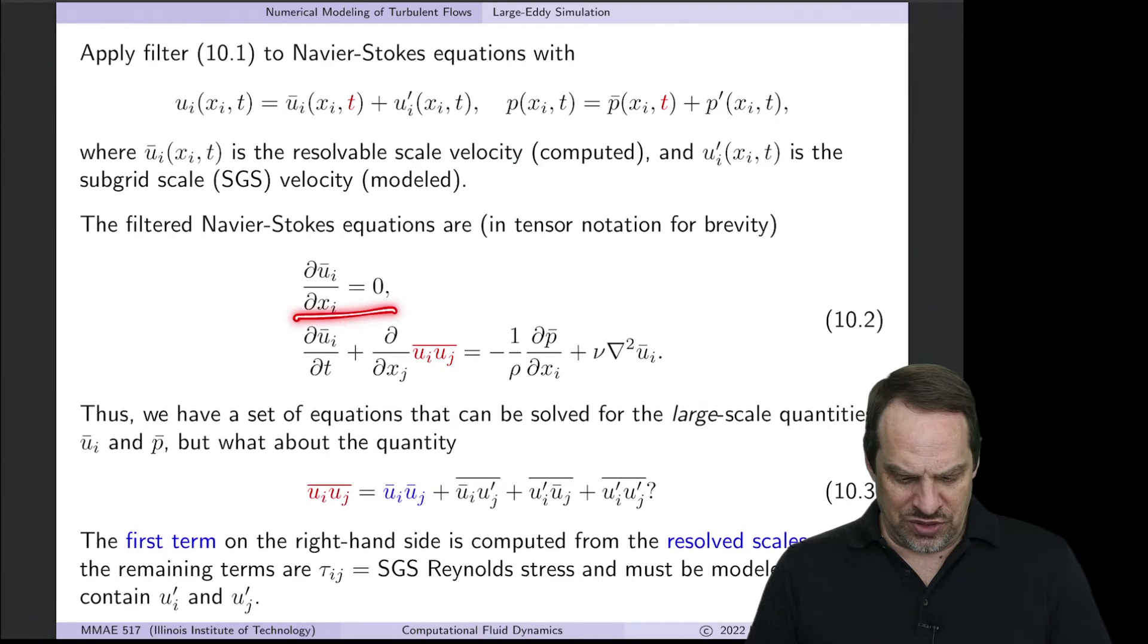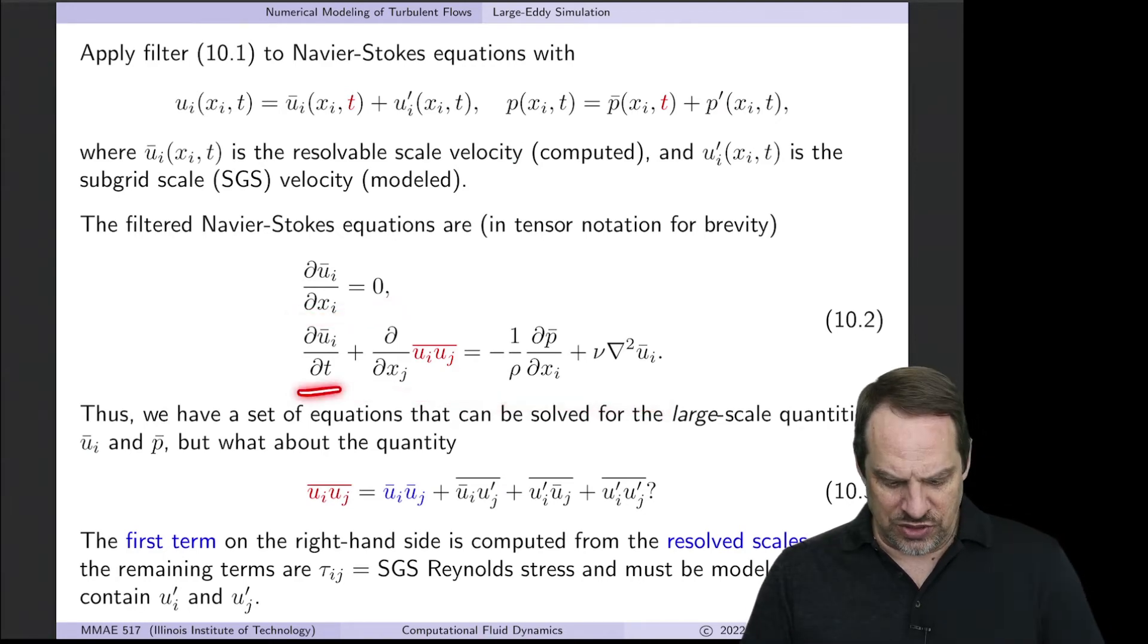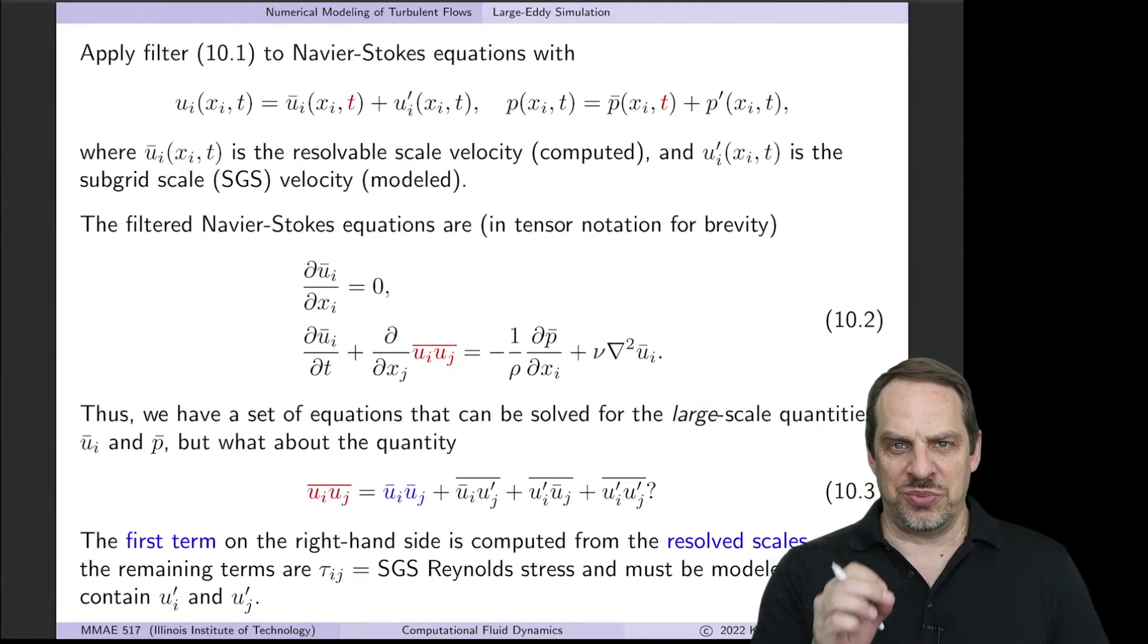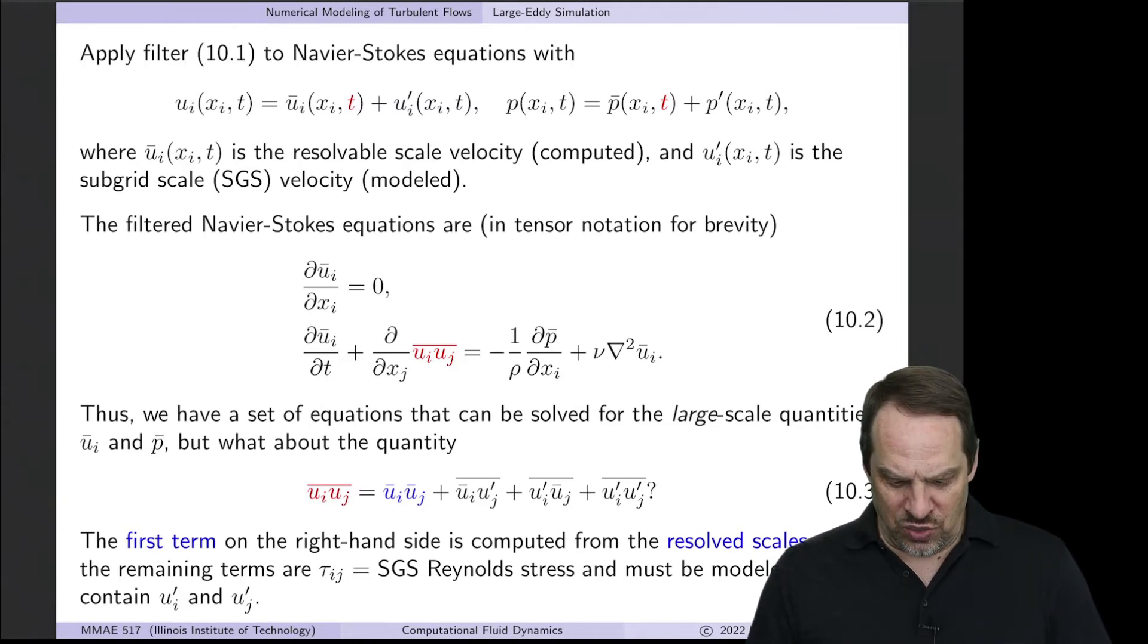Here's the continuity equation and momentum equation. They look very similar to the usual Navier-Stokes equations except the convection terms now look different. The first term is in terms of resolvable scales computed by LES, whereas the three terms with primes are being modeled. We need to figure out how to model those terms.